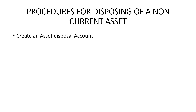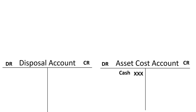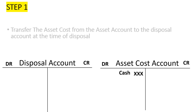It's going to take us basically four steps. First of all, we are going to create what we call an asset disposal account. If we are disposing of a motor vehicle, it will become a motor vehicle disposal account. If we are disposing of furniture, then we shall call it a furniture disposal account. So using general terms, we are going to create an asset disposal account.